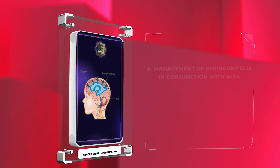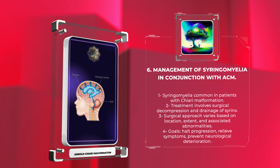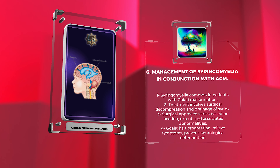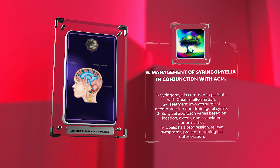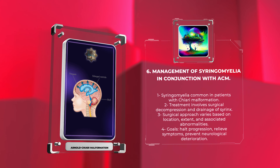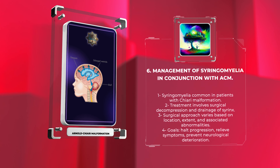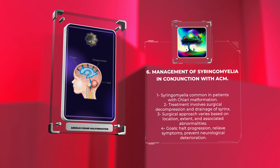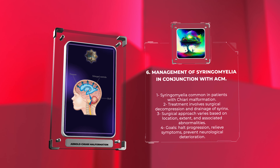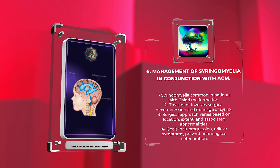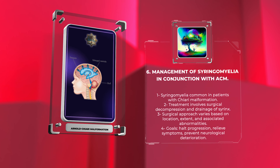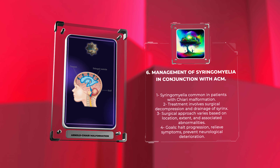Syringomyelia is a common coexisting condition in patients with Chiari Malformation, characterized by the formation of a fluid-filled cavity within the spinal cord. Treatment typically involves surgical decompression to relieve the obstruction of cerebrospinal fluid flow and drainage of the syrinx. The surgical approach may vary depending on the location and extent of the syrinx and associated abnormalities. Goals include halting progression, relieving symptoms, and preventing neurological deterioration, with regular follow-up and imaging to monitor the syrinx.